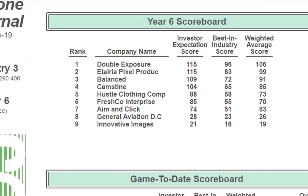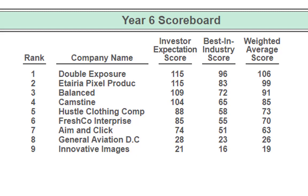The year six scoreboard: number one is Company D at 106, with a decent seven-point lead for the first year. Company E is at number two at 99, Company B at 91, Company C at 85. Looking down the list, I don't have major concerns because there will be a gap based on strategy. However, at the very bottom, Company G is at 26 and Company I is at 19. I'm not panicking too much yet because this was practice year six — depending on their strategy, maybe they'll make a big leap in year seven.